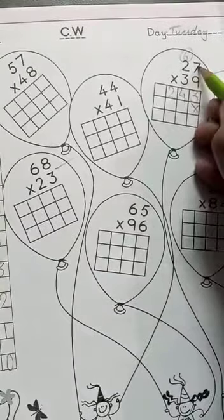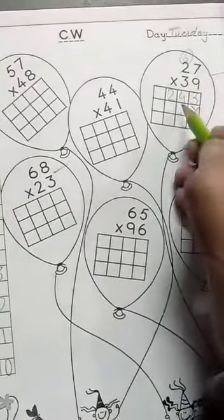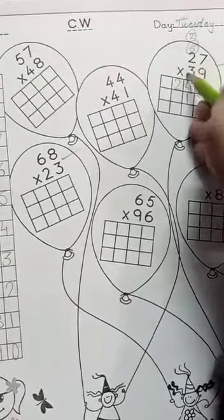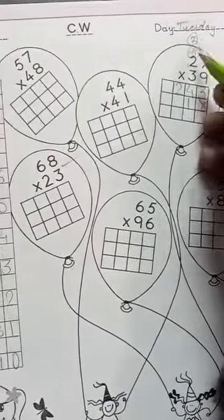One cross, then the 3 table will be 7. 7 threes are 21. 21 will be 1, 2 carry. Then 3 table will be 2. 2 threes are 6. 2 plus 6 is 8.